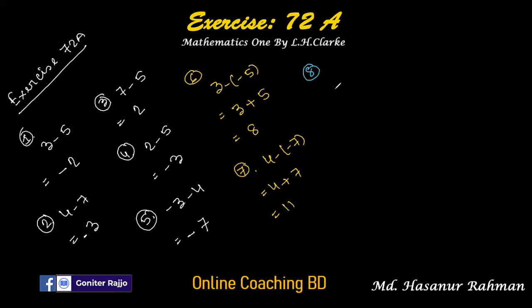Number eight: minus 4 minus minus 7. So minus 4, minus into minus is plus 7. Minus 4 plus 7 should be 3.